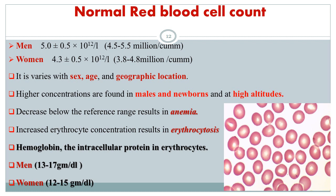In males, the RBC count ranges from 4.5 to 5.5 million per cubic millimeter. In females, it ranges from 3.8 to 4.8 million per cubic millimeter. The count varies by sex, age, and geographical location. Higher concentrations may be found in males, newborns, or at high altitude. When RBC count falls below normal, it is called anemia; when erythrocyte concentration rises above normal, it is called erythrocytosis.